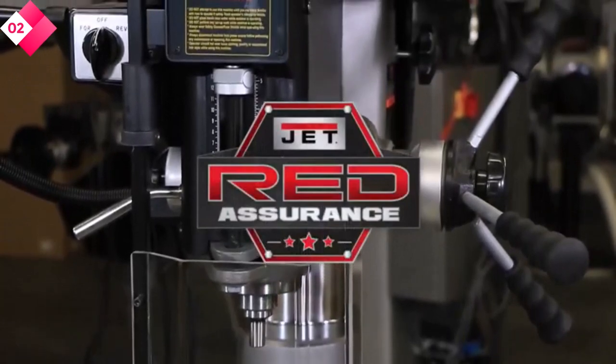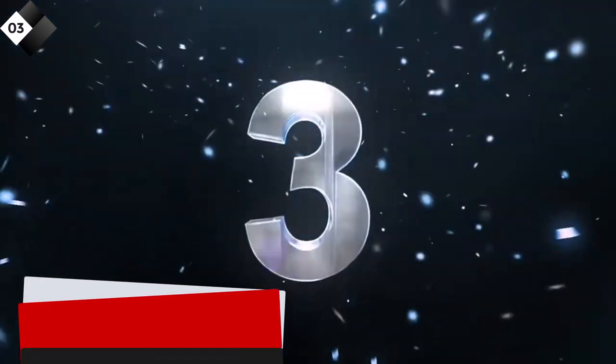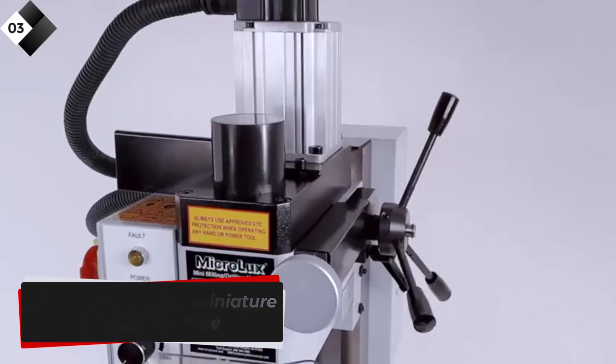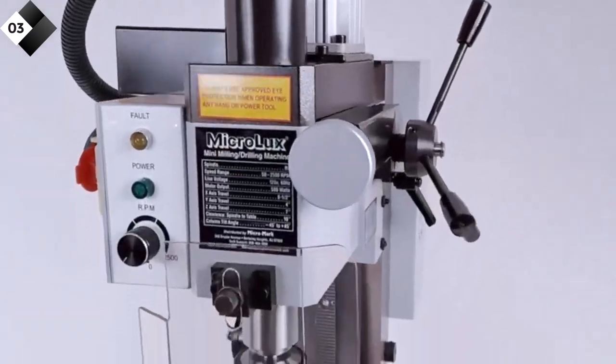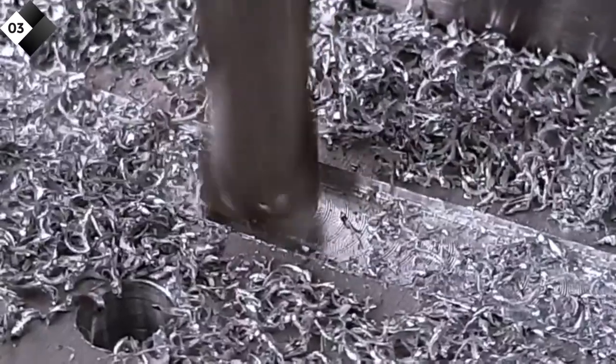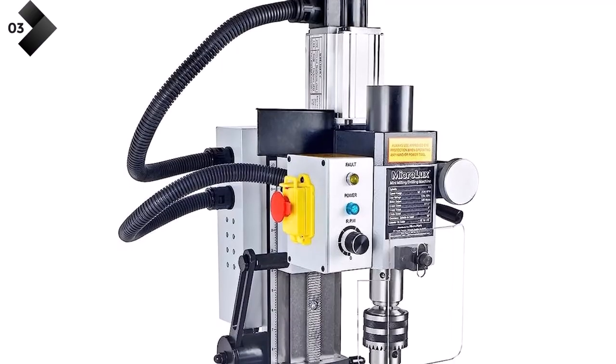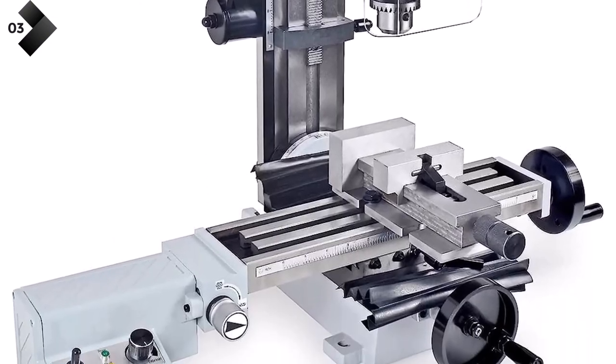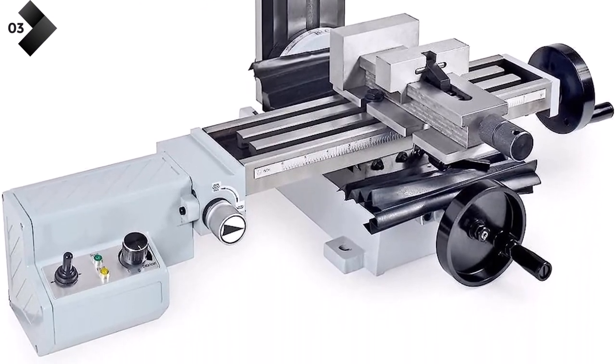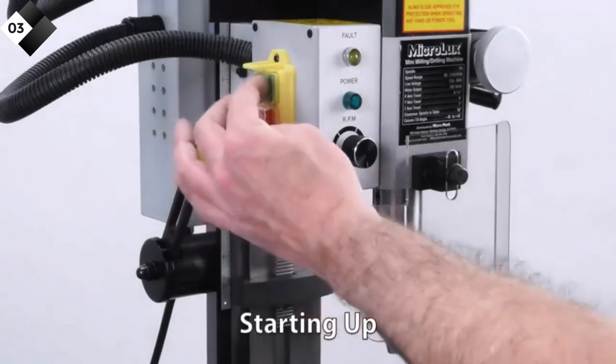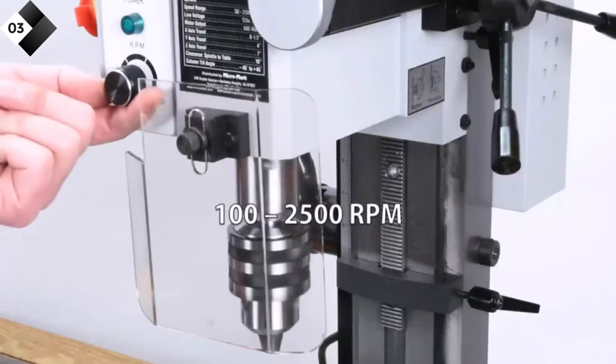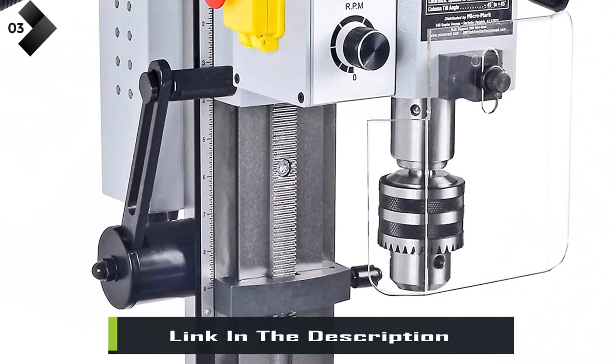Number three: Microlux precision miniature milling machine. This milling machine is a compact and versatile tool that brings precision and accuracy to your machining projects. Designed for small-scale milling and drilling tasks, this machine offers exceptional performance in a compact package. With its solid construction and precise engineering, this milling machine ensures stability and accuracy. The X and Y axis hand wheels offer smooth and precise movement, while the adjustable dovetail ways provide rigidity and precision.